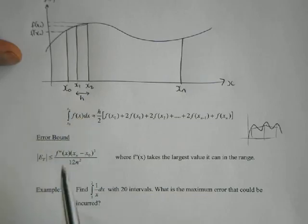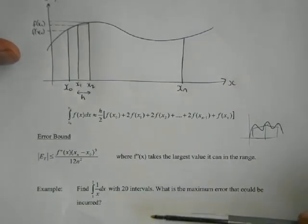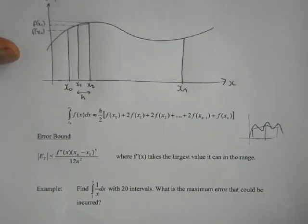On that spreadsheet, we're going to need h and the various function values to work out the actual value of the integral. Then we need to know the n value and the second derivative to work out the error bound. The next video will look at a spreadsheet for doing this, and then I'll come back and do another video which covers the actual calculations and shows you what's going on.